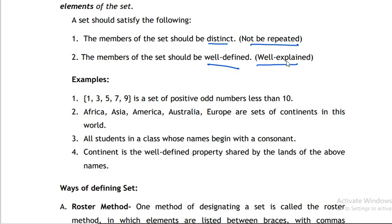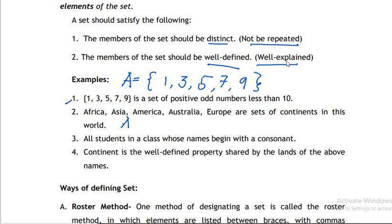For number one, to write the set in roster method: A = {1, 3, 5, 7, 9}. That is how we write it in roster method.